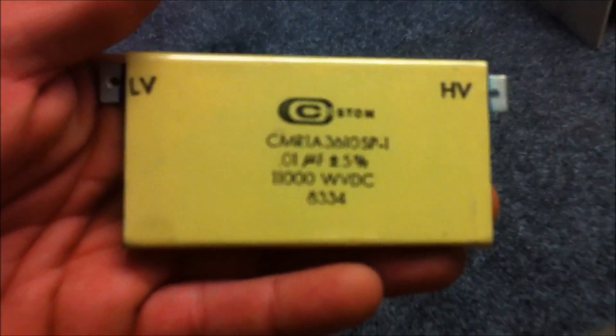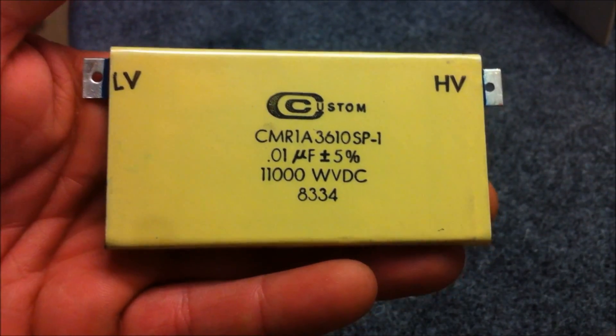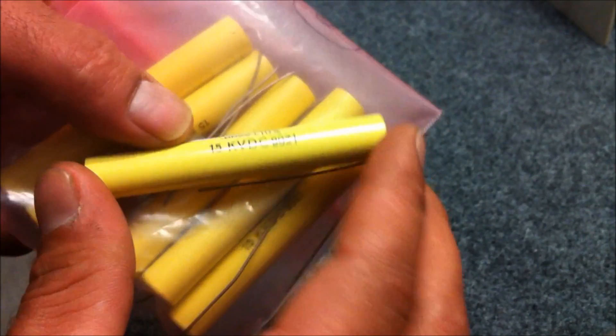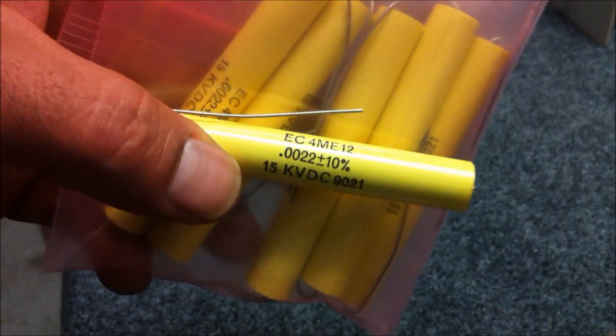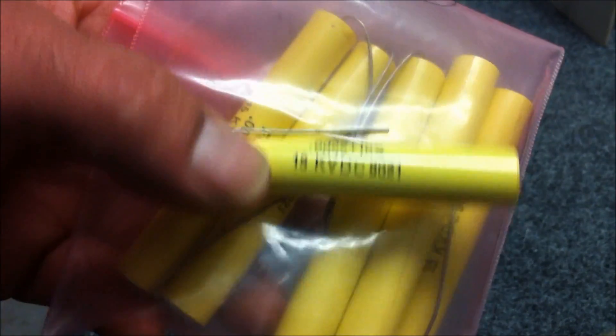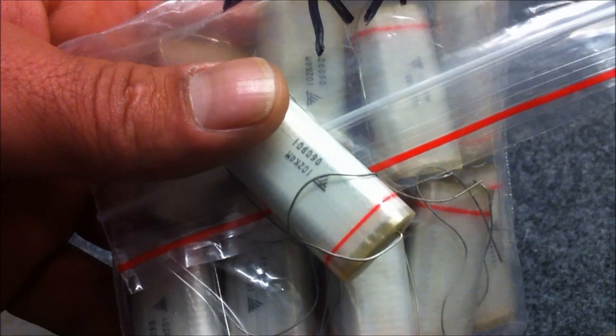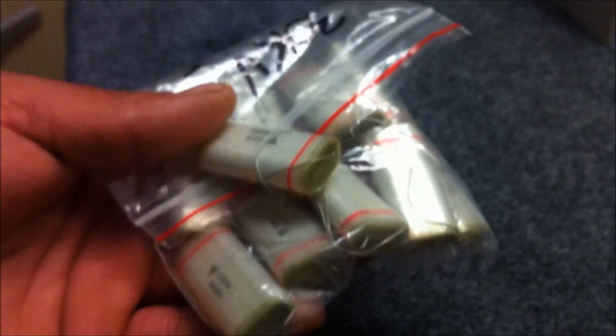And then we go to the 11,000 volt range. And I have one of these which you've seen before. This is my Don Smith CMR1A cap. So that's 0.01 microfarad 11kV. And then we go to the 15kV where I have 6 of these. These are 2,200 picofarad 15kV DC caps. That's 6 of those. And I have 10 of these which are 1,000 picofarad 30kV caps.